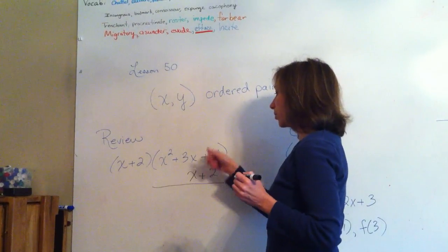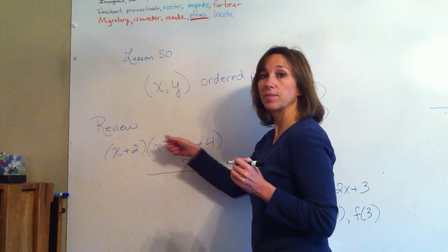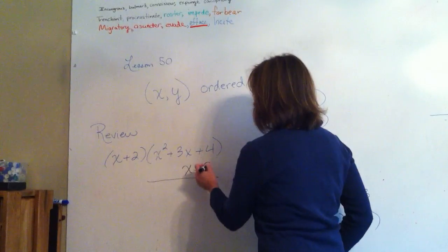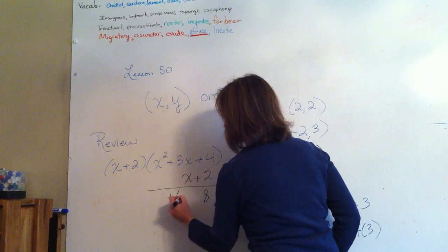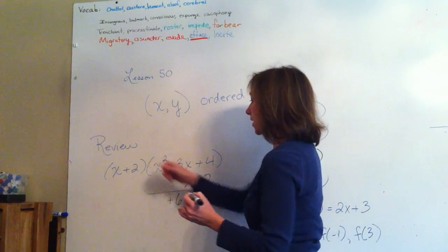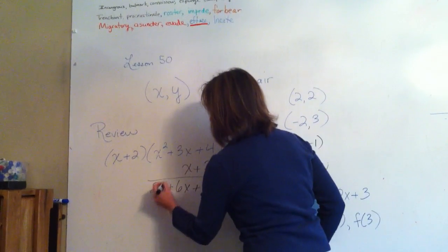Then you're going to take the first number and multiply it by all three of the one above it. So 2 times 4 is 8. 2 times 3x is 6x. 2 times x squared is 2x squared.